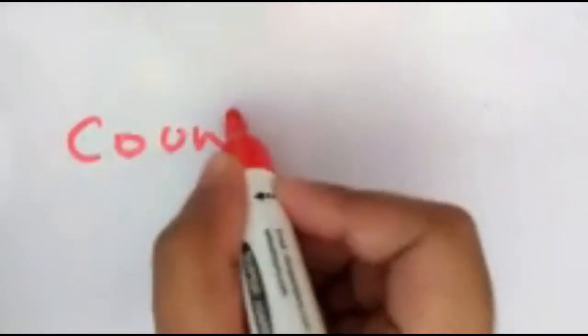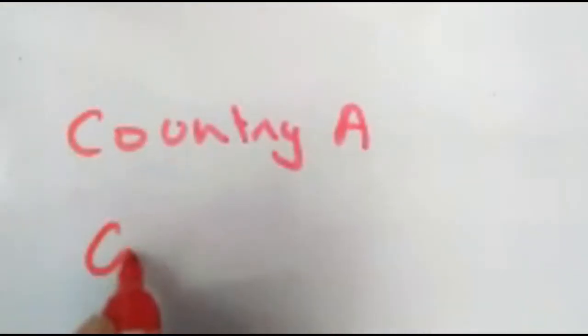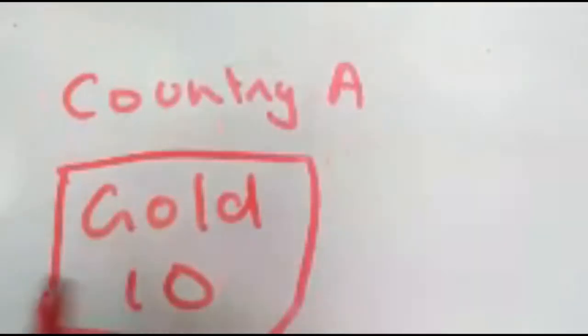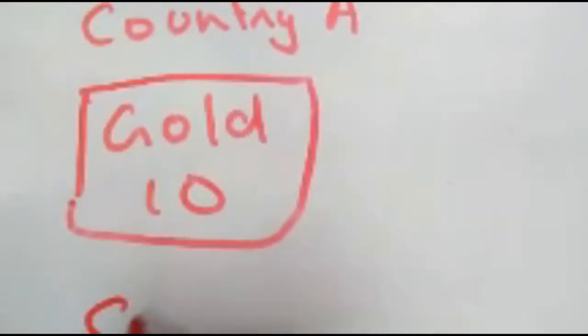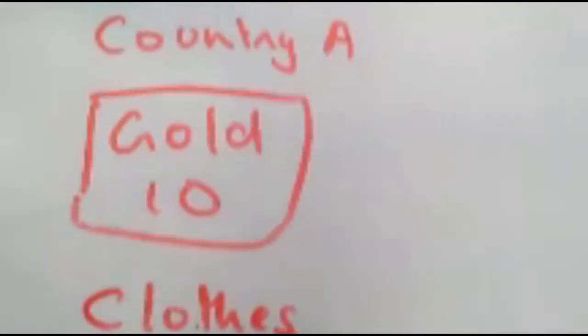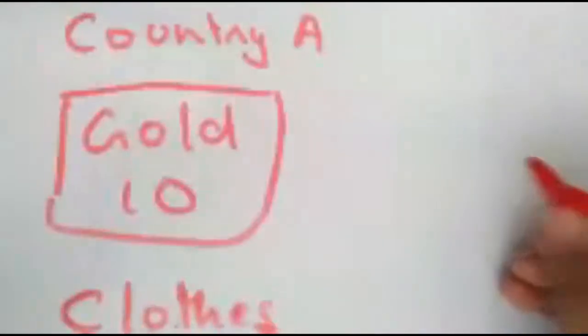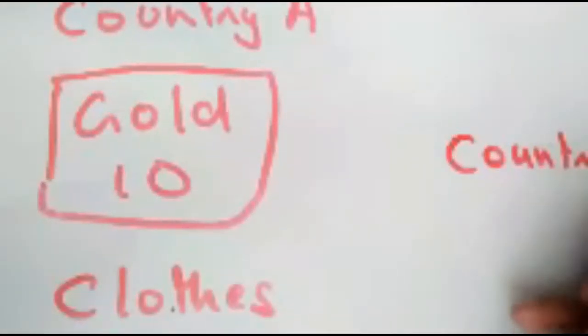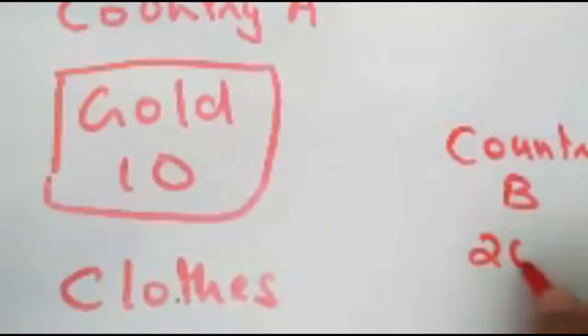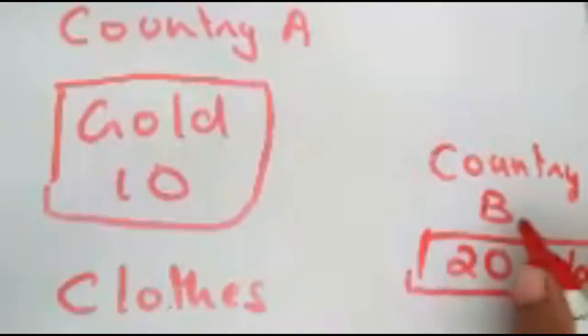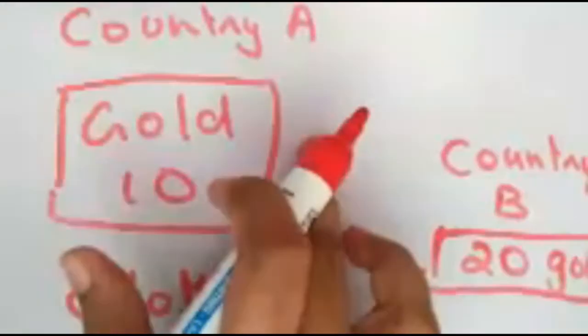Let's see the example of mercantilism theory. There is a Country A which has 10 gold coins, and Country A is producing clothes. And there is a Country B which has 20 gold coins, and Country B needs clothes.